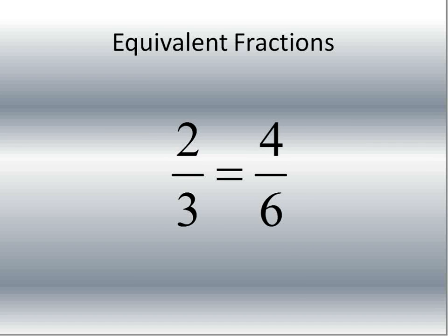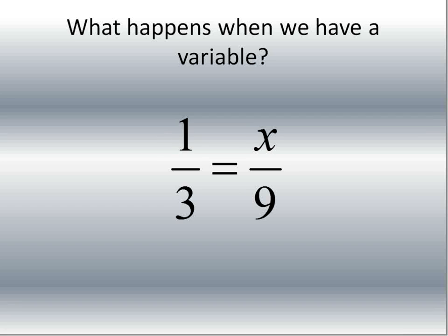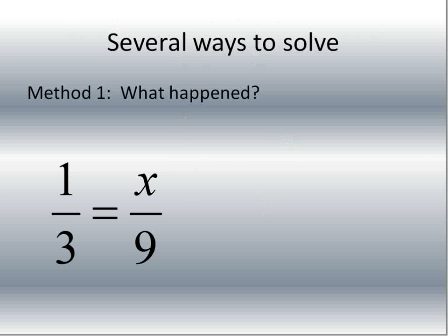Remember what equivalent fractions are. Equivalent fractions are fractions that are the same — they mean the same thing, they're just written in a different way, like two-thirds is equal to four over six. When we get that with a variable on top, it changes things, because one-third is equal to some number over nine, and we're not told what that number is. Our job is to figure out what that number is.